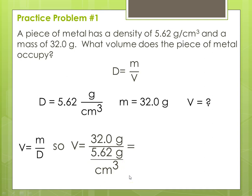Then you need to check your units and cancel where appropriate. Grams divided by grams equals 1, so it goes away. That will leave us with 1 over 1 over centimeters cubed, which is going to resolve itself to centimeters cubed. Then we need to plug it into our calculator, and this is the answer I got — it has way too many significant figures. So we need to look at the measurement that was given, remembering that density is a constant. Our measurement was mass, and that number had three significant digits.